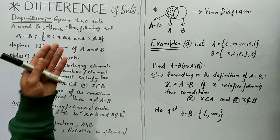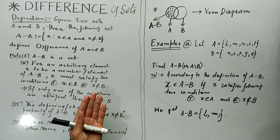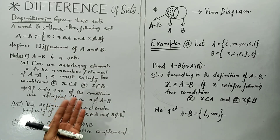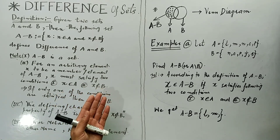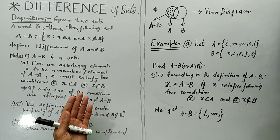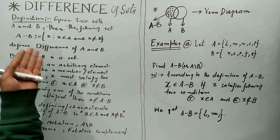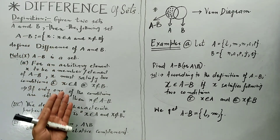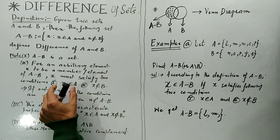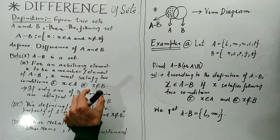This defining property actually consists of two parts. The first property is X must belong to A, and the second property is X must not belong to B. What if I have an element that belongs to A but also belongs to B? That element does not belong to A minus B, because it satisfies only one property. X must satisfy both conditions: X must be an element of A, and X must not be an element of B.